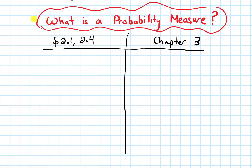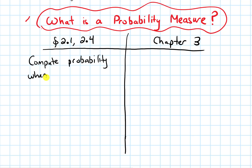In this video, we will talk about what a probability measure is. In sections 2.1 and 2.4, when we first talked about computing probability, we did so when we have equally likely outcomes.